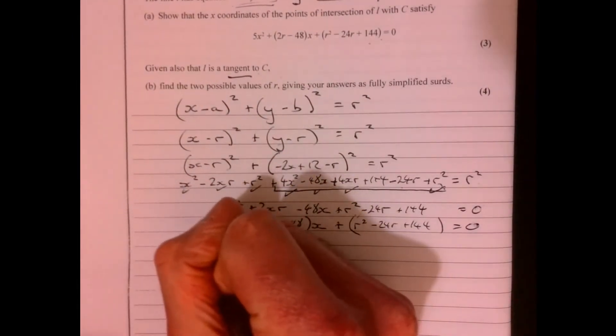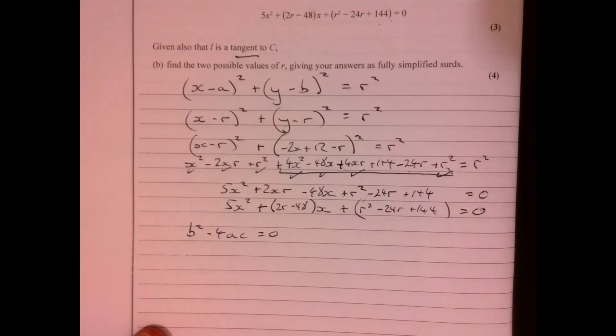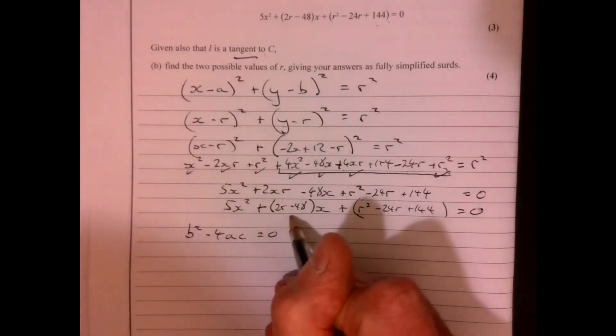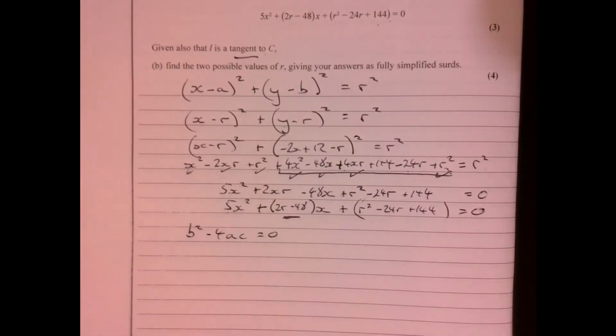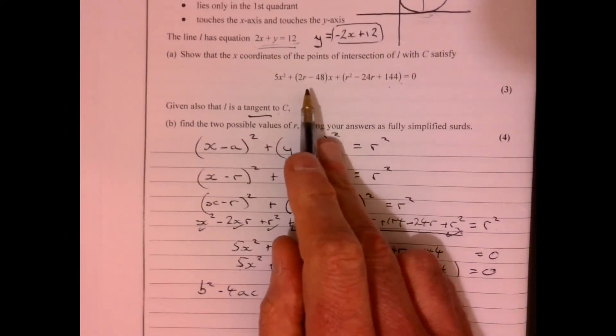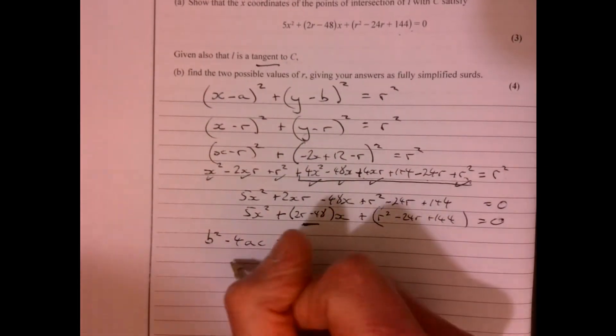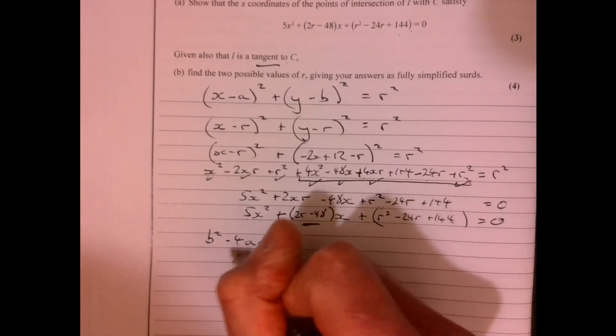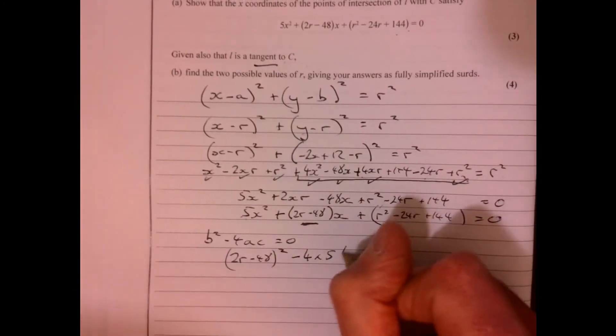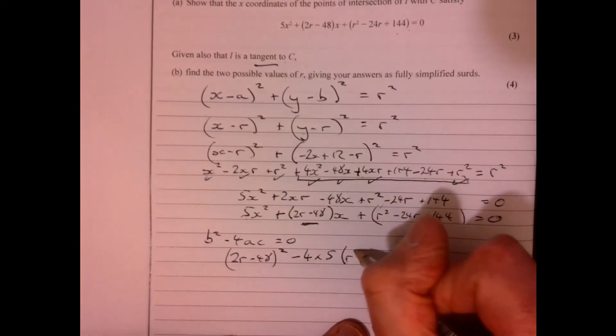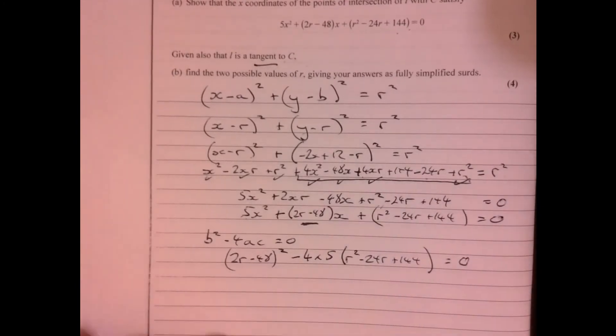So discriminant. This is where b² - 4ac equals zero comes in. All right, so now let's just put it all in here. So this is b, that's a, that's c, isn't it? Just notice how they wrote all of that down for us. Remember, if they've done something and it's a little bit unusual, there's probably a reason why they've done that. So let's just put everything in: b, so (2r - 48)² - 4 × 5 × (r² - 24r + 144), and we want to know when that's going to equal zero.